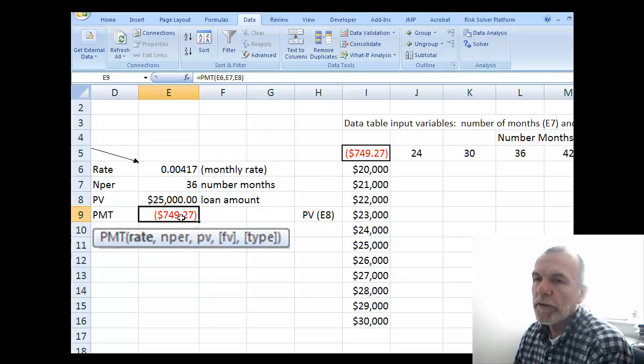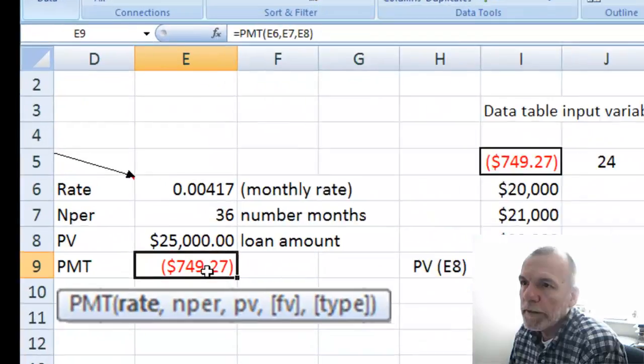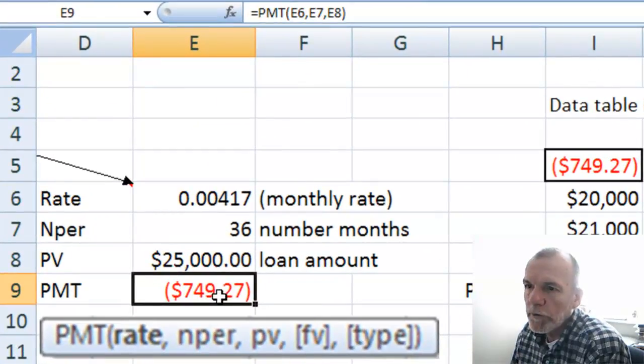We want to see how this payment would vary as a function of two of those parameters, two of those inputs: number of periods and present value.